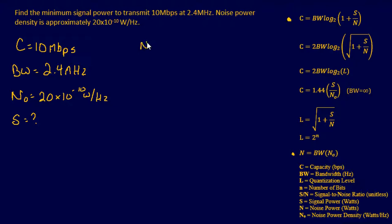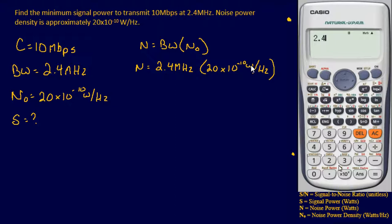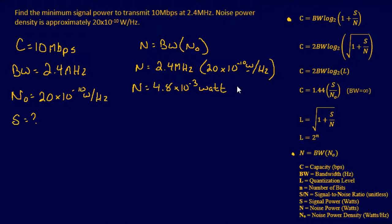First, find noise power: N equals bandwidth times noise density. So N equals 2.4 megahertz times 20×10⁻¹⁰ watts per hertz. The hertz units cancel, leaving watts. Plugging into the calculator gives 4.8×10⁻³ watts, or 4.8 milliwatts. We've now found our noise power.